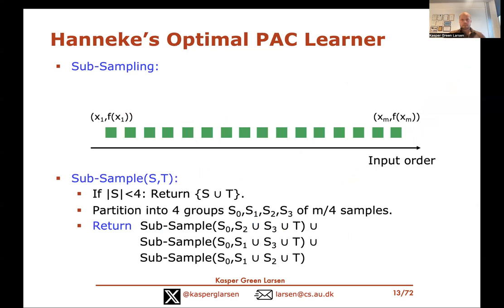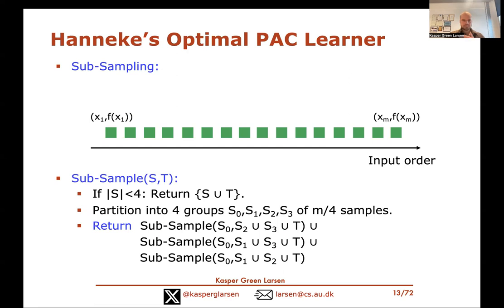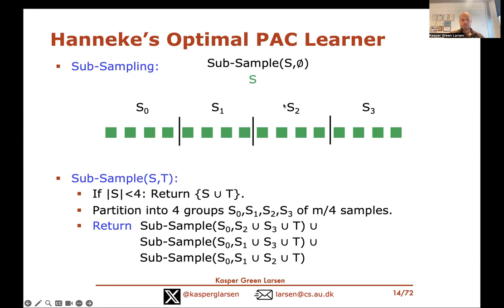Let me give the main intuition in Hanneke's optimal PAC learner at a high level. The main idea is to create subsamples of the training data using a carefully designed recursive procedure. You start by invoking this procedure with the full training dataset S as the first argument and the empty set as the second argument T.